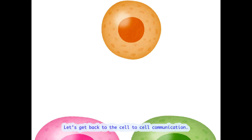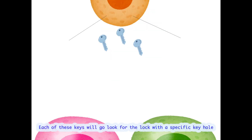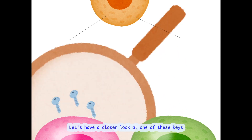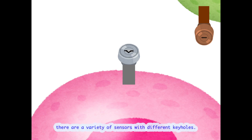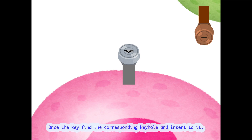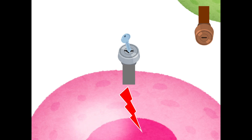Let's get back to cell-to-cell communication. What cells make use of during communication is keys. Each of these keys will go look for the lock with a specific keyhole that only itself can open. On the membrane of the cell, there are a variety of sensors with different keyholes. Once the key finds the corresponding keyhole and inserts into it, the sensor will send a signal into the cell. This is the signal transduction of a cell.